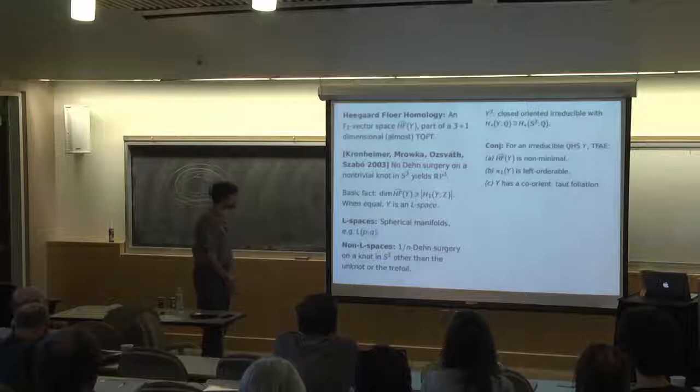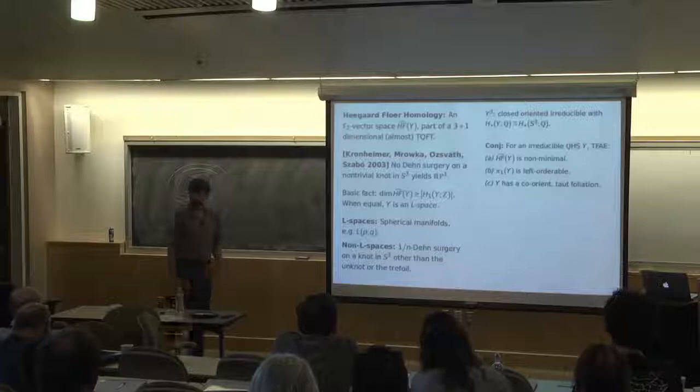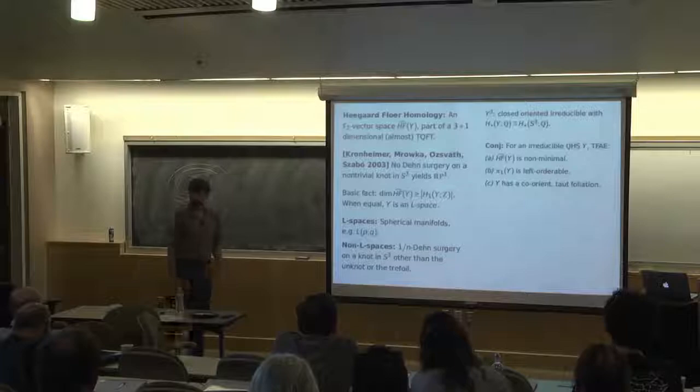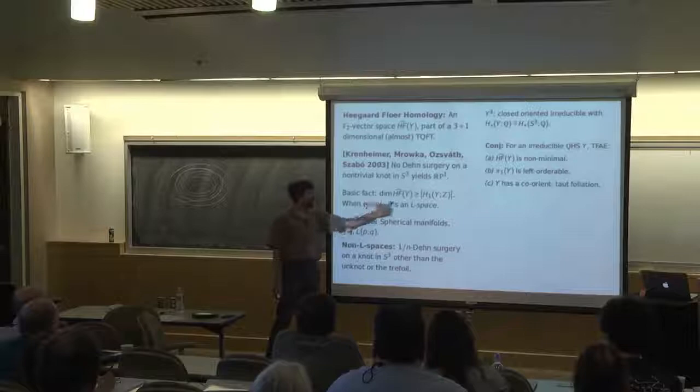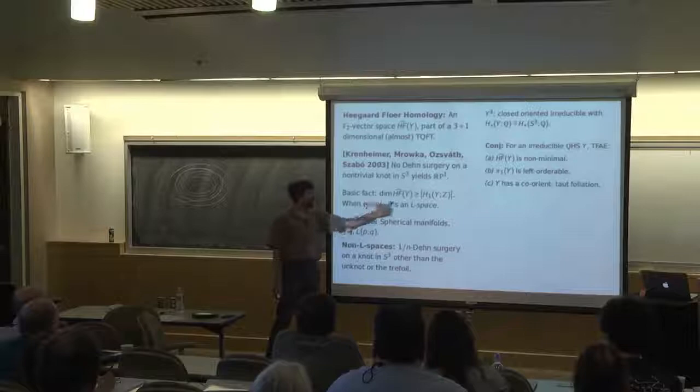For us, I'm really only going to use the following basic fact: even for the three-sphere, this vector space is non-trivial — it's one-dimensional. For RP3 it's two-dimensional. In general, its dimension is bounded below by the size of the first homology. We're going to distinguish the manifolds for which this inequality is an equality, and I'm going to call those L-spaces.